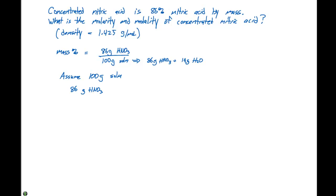Which we need to convert over to moles because we need to determine our molarity. One mole of HNO3, if we look up on the periodic table, is 63.02 grams, which gives us 1.365 moles of HNO3.